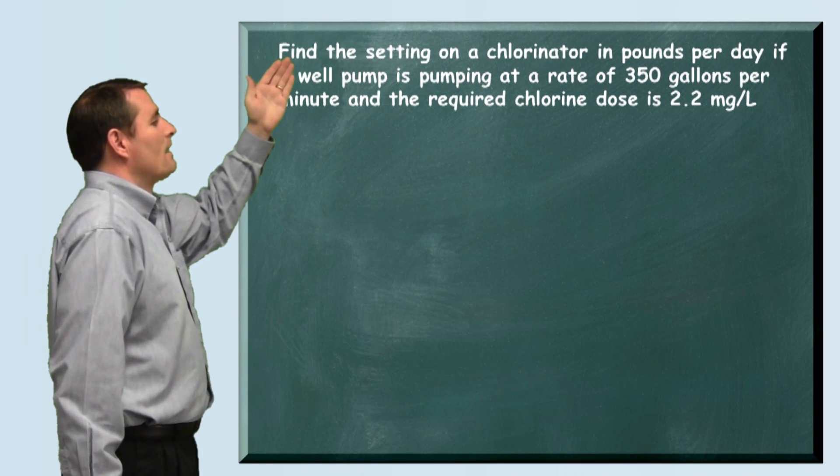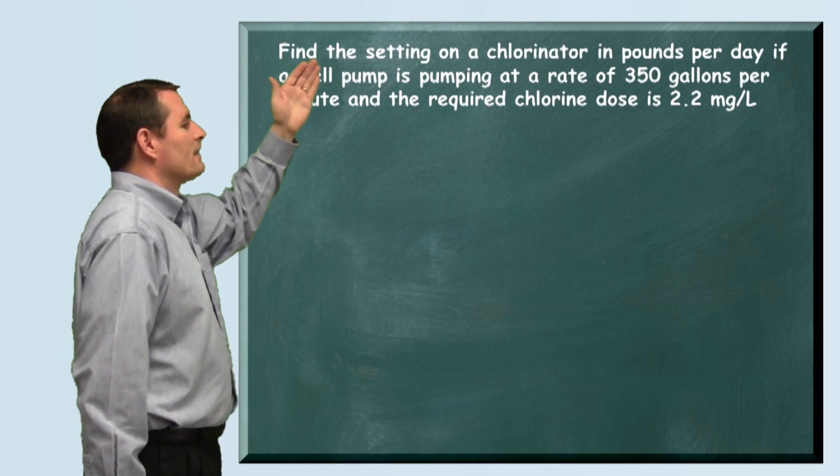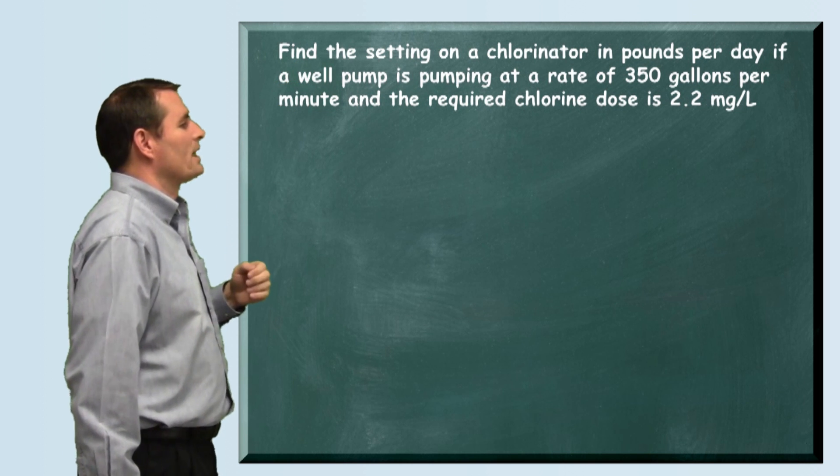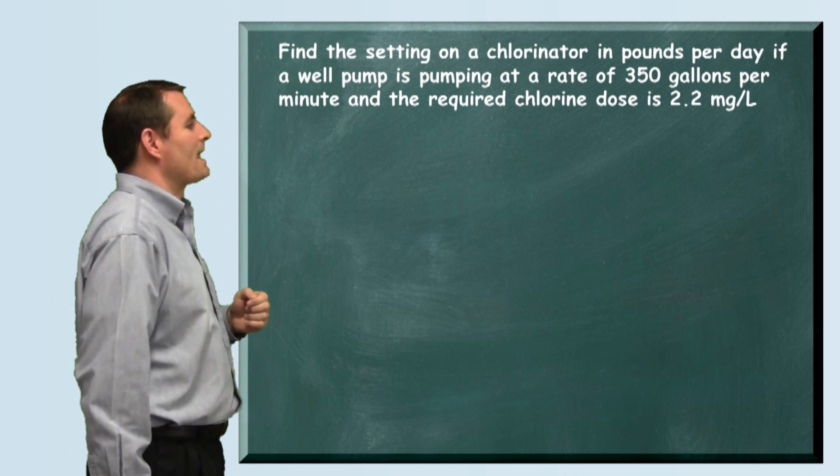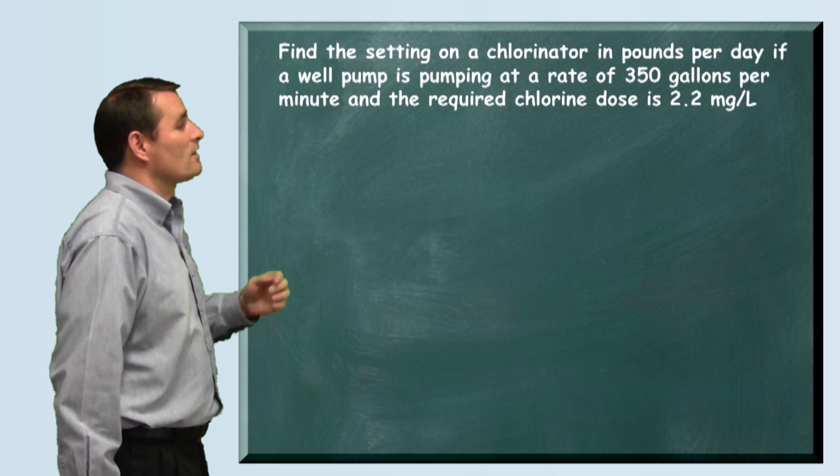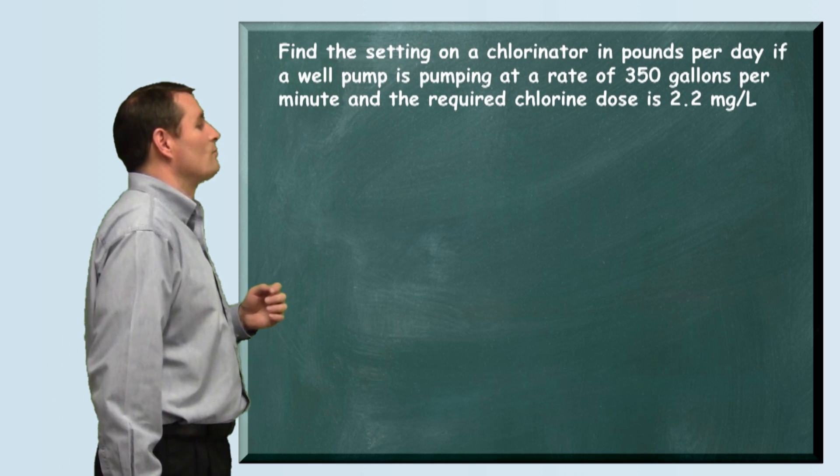The problem reads: find the setting on a chlorinator in pounds per day if a well pump is pumping at a rate of 350 gallons per minute and the required chlorine dose is 2.2 milligrams per liter.